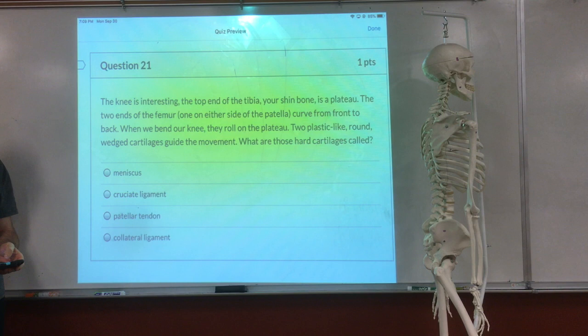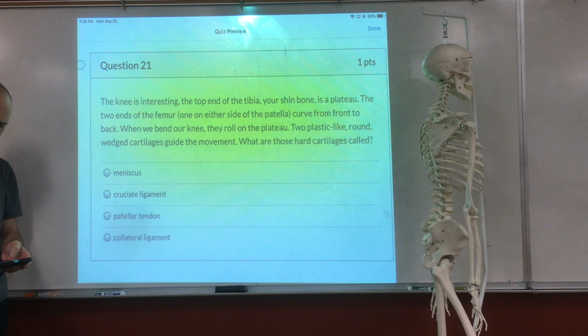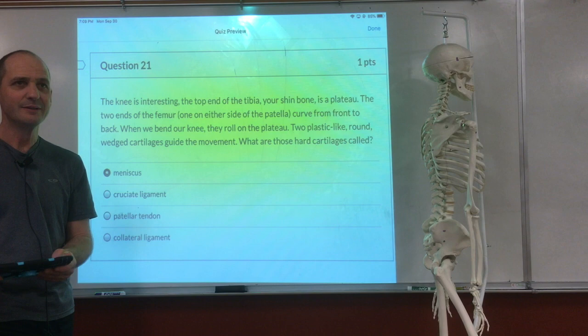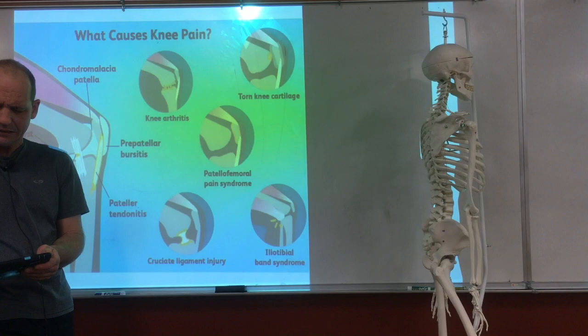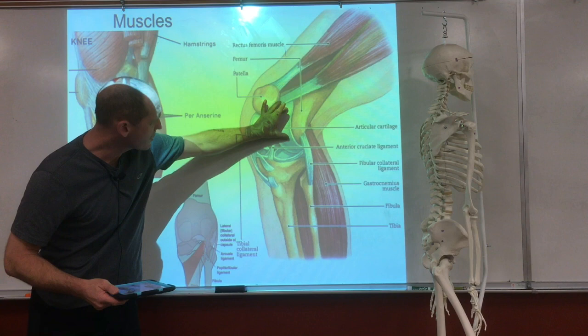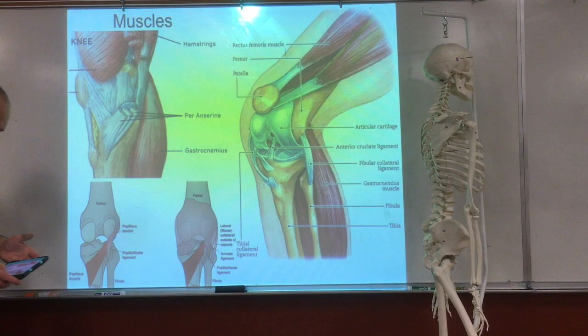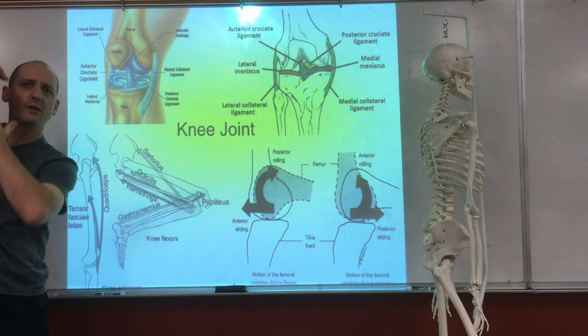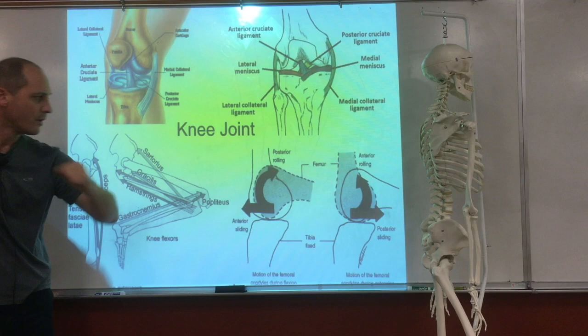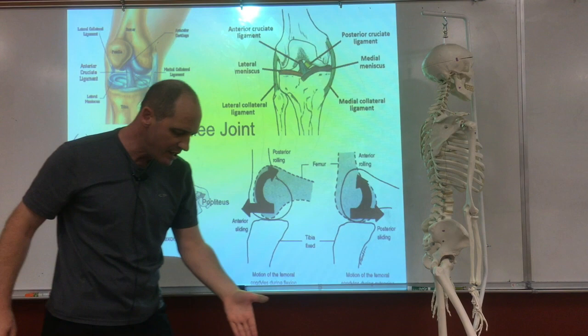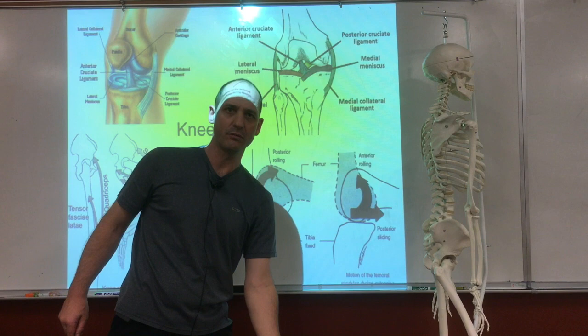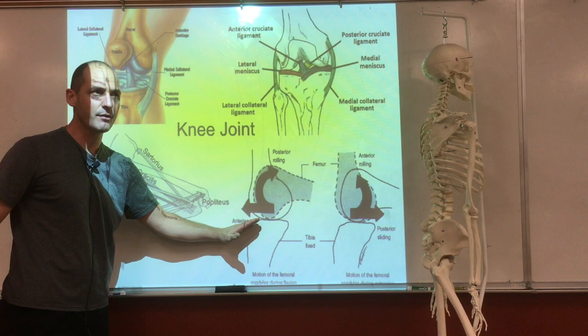The top end of the tibia, your shin bone, is a plateau. The two ends of the femur on either side curve from front to back — when we bend the knee, they roll on the plateau. Two plastic round disc wedge cartilages are guiding the movement. What are those cartilages called? Meniscus. Have you heard of a torn meniscus? They can crack — and that's not pretty. When bending the knee it's like rolling — the femur rolls on the plateau. That's one reason why you don't want a knee in front of the foot when you do an exercise.